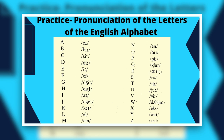Now that we have discussed the phonetic symbols for consonants and vowels, let's practice the pronunciation of the letters of the English alphabet: A, B, C, D, E, F, G, H — not 'H,' it's 'H' — I, J, K — not 'K' — L, M, N, O — not 'O,' it's 'O' — P, Q, R, S, T, U, V, W, X, Y, Z. I hope that the pronunciation of the letters of the English alphabet is clear to you.